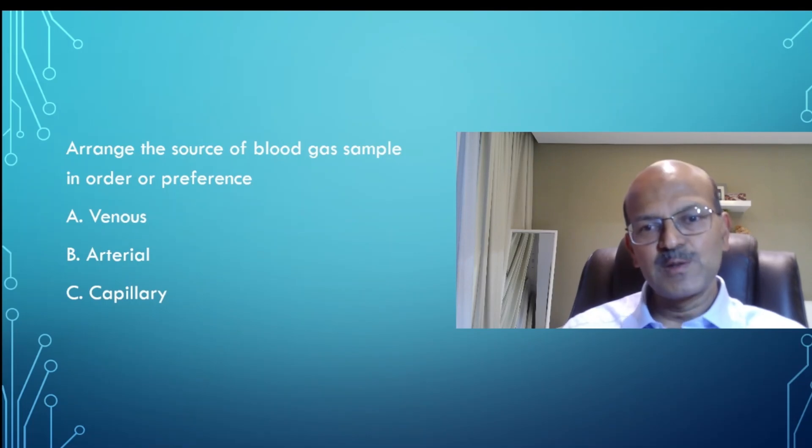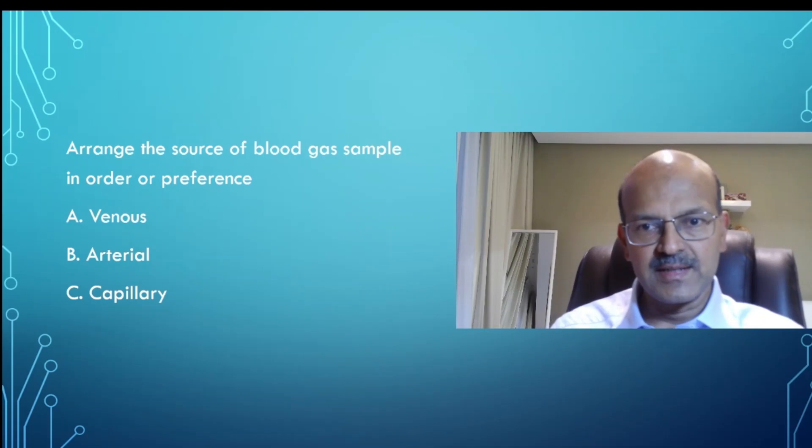Okay, so as I said, the answer is obvious. The first choice is going to be arterial sample, which is the gold standard. Your PaO2, your pH, your carbon dioxide, everything is going to be more accurate. What we are looking for is arterial.